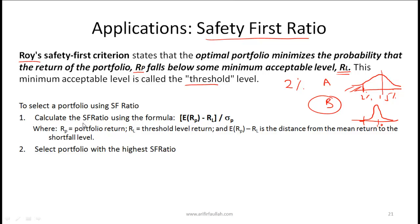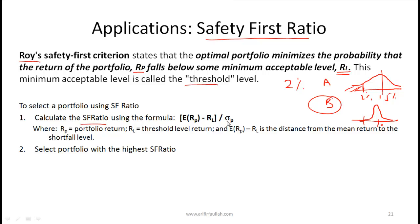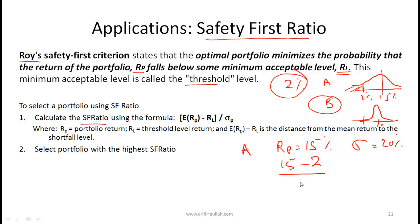From an exam perspective, you must know how to calculate the safety first ratio, which is the expected return on the portfolio minus the threshold value, divided by the portfolio standard deviation. For portfolio A, with an expected return of 15%, a standard deviation of 20%, and a threshold of 2%, the ratio is 15 minus 2 divided by 20.